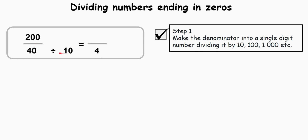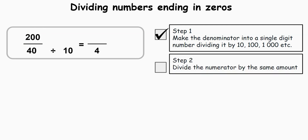Now, with division, if you make the divisor a certain number of times more or less valuable, you would also need to make the dividend equally more or less valuable to maintain the same value. This leads to our second step: we need to divide our numerator, 200 — also known as the dividend — by the same number we divided our denominator by. So that means you'll divide 200 by 10 as well. 200 divided by 10 means we're making 200 ten times less valuable, which means it will become 20.